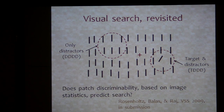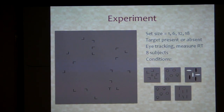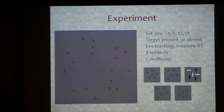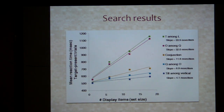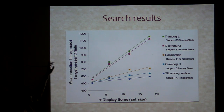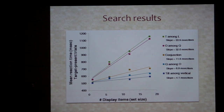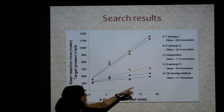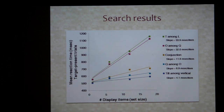Can this predict search results? We reran five classic search conditions with the same subjects and displays. We eye-tracked. We get search results showing mean reaction time to find the target versus the number of display items — this is just for correct target-present trials. The slopes of these lines are a common measure of search performance, and these are very similar to results in the literature.